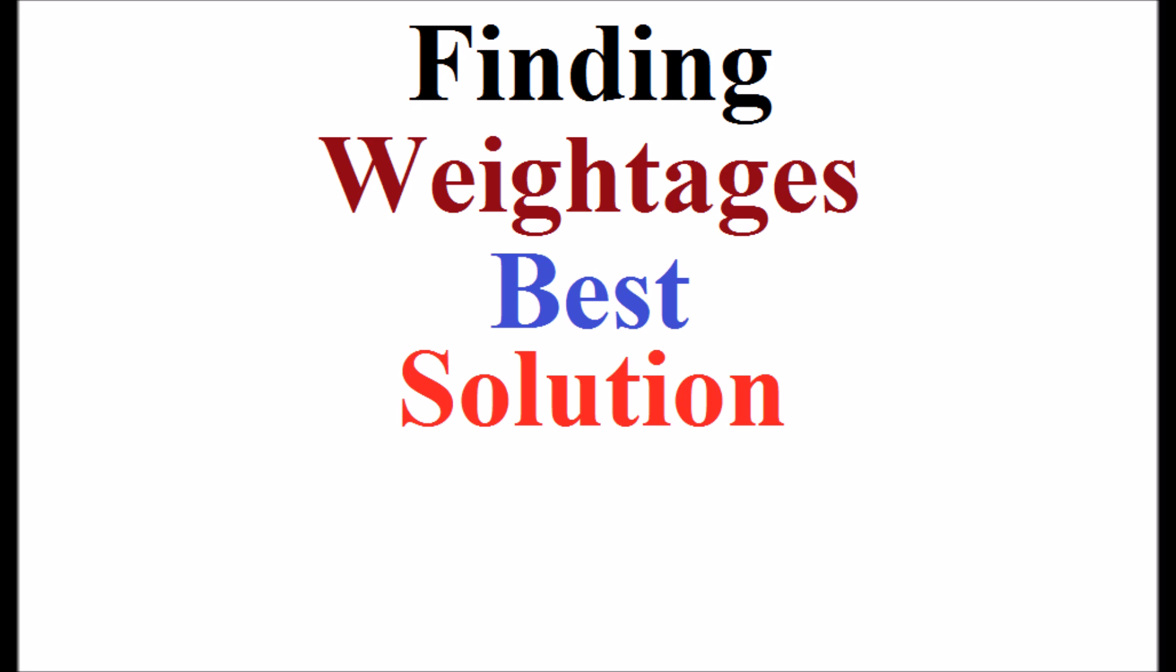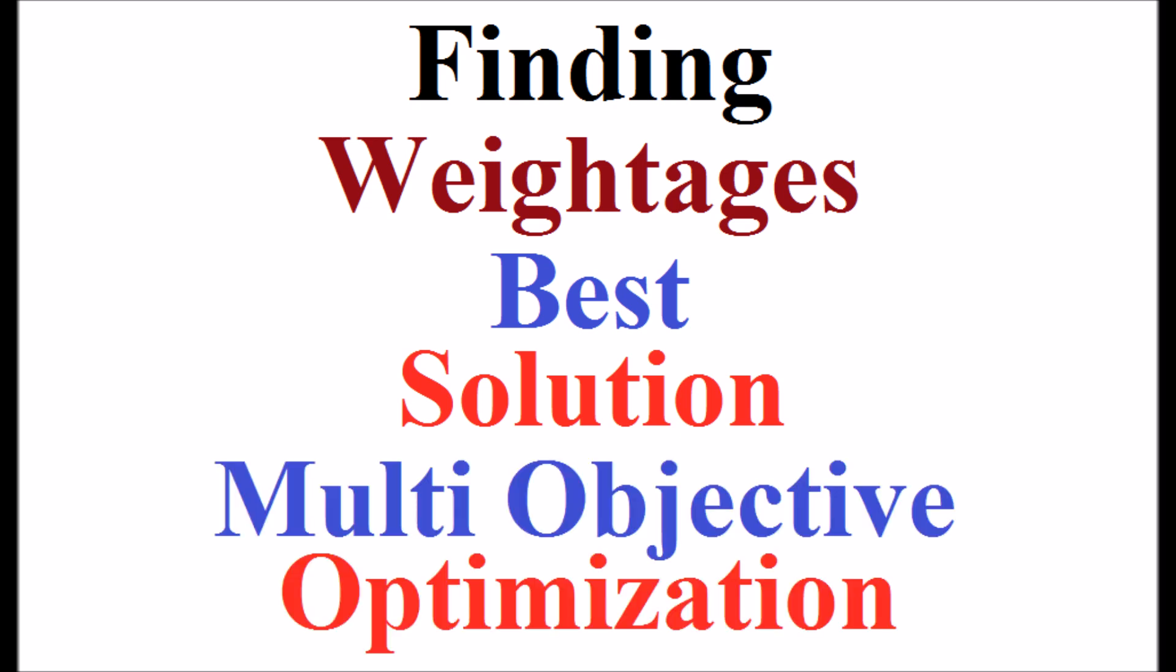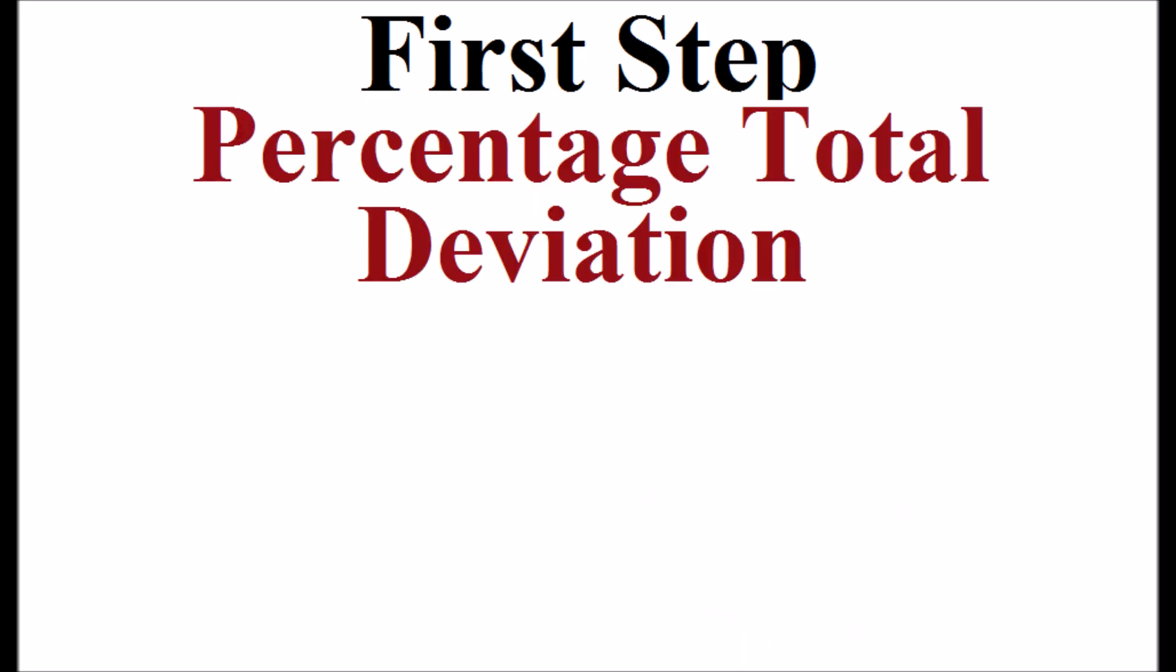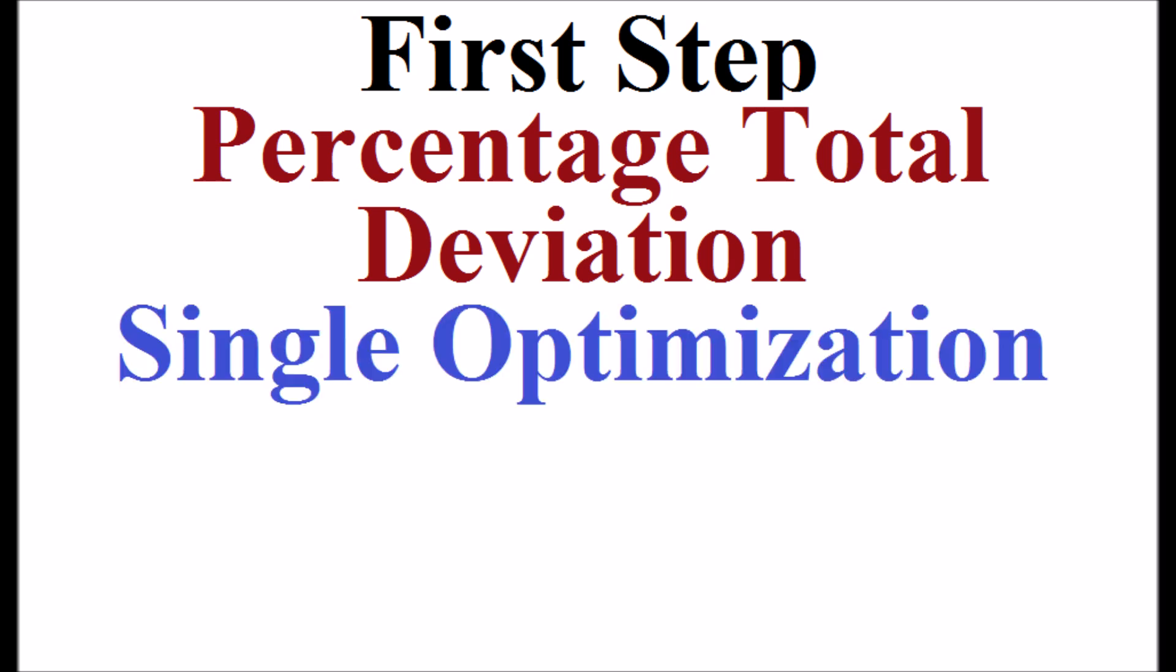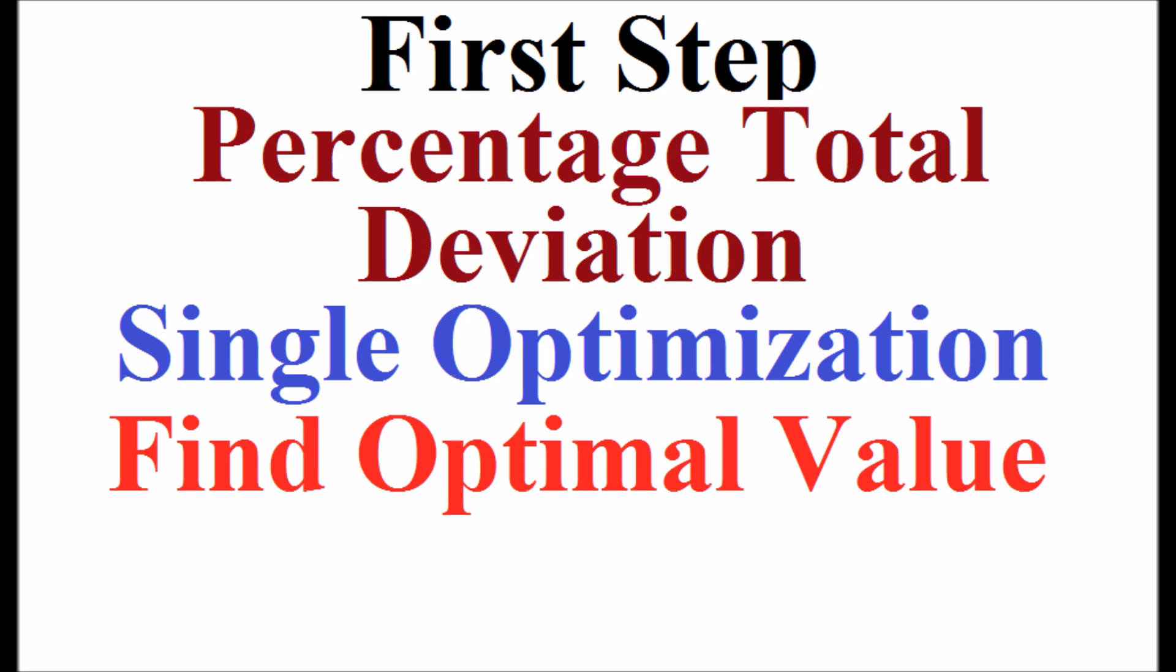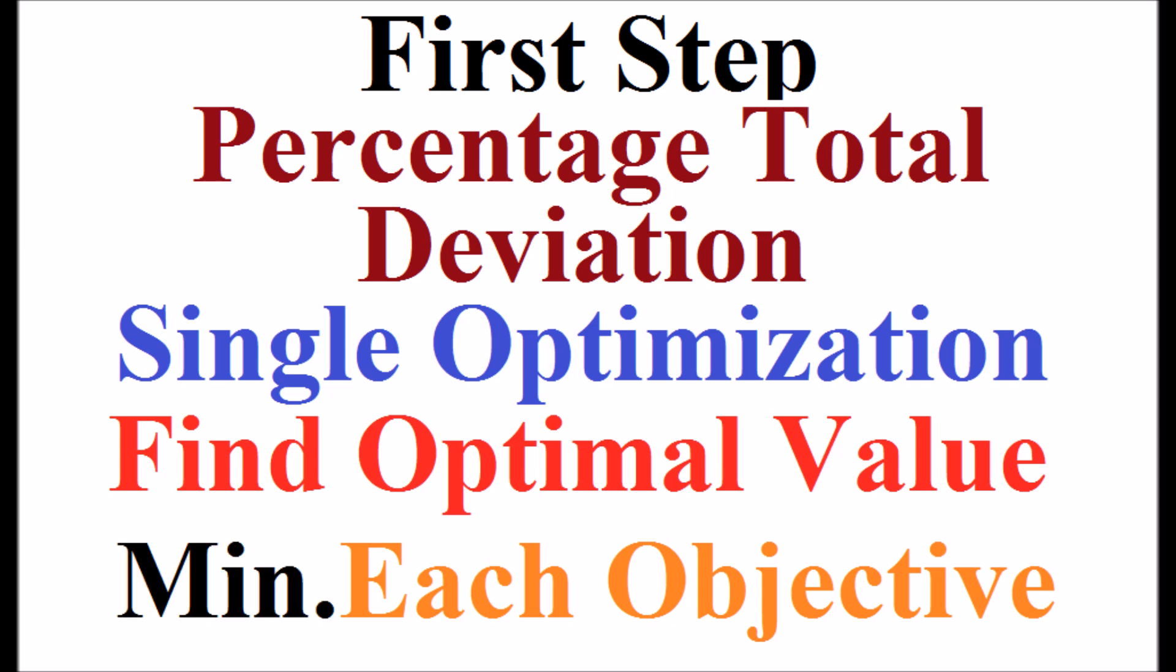First step in the percentage total deviation method: By using single optimization methods, find the optimal value of each objective. That is the minimum value of each objective.